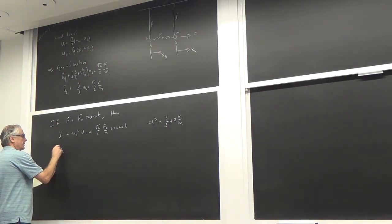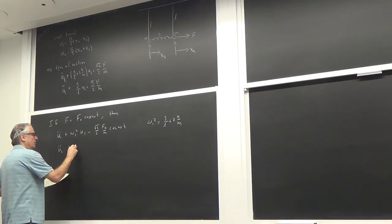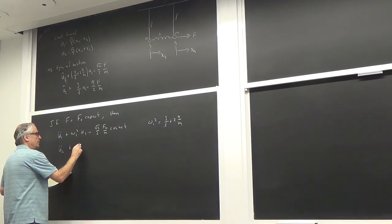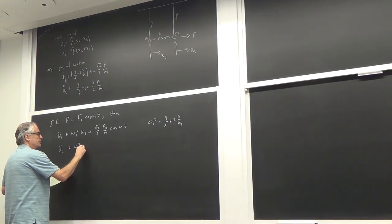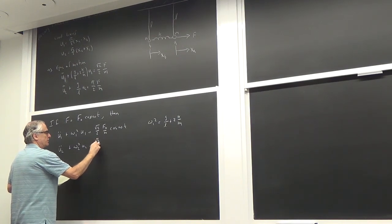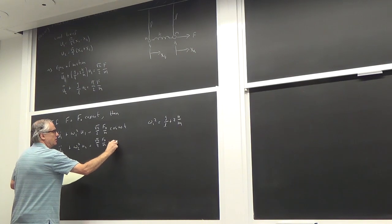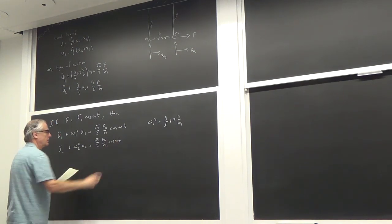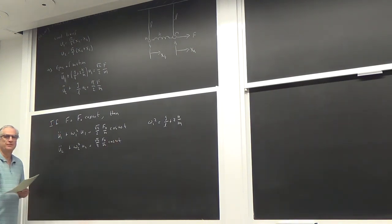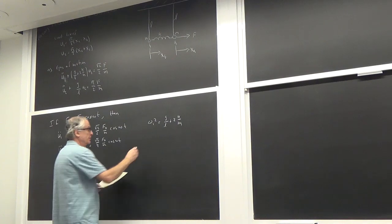And then the differential equation for u2: u2 double dot plus omega_2^2 · u2 equals (√2/2) · (F_0/m) · cos(omega t), and omega_2^2 is defined similarly.